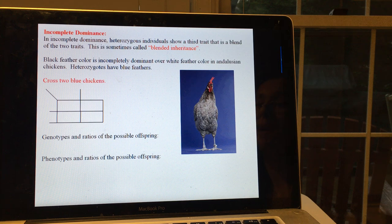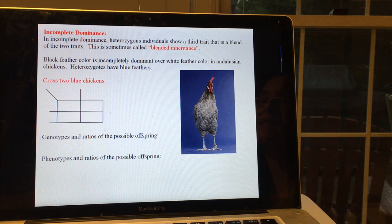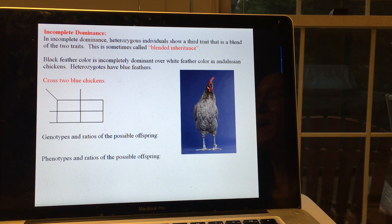The classic example that textbooks like to use is Andalusian chickens. Black feather color is incompletely dominant over white feather color, and the heterozygous individuals have a bluish color. Now we don't mean a bright blue, but like if you've ever seen a Russian blue cat, it's kind of a grayish blue color.